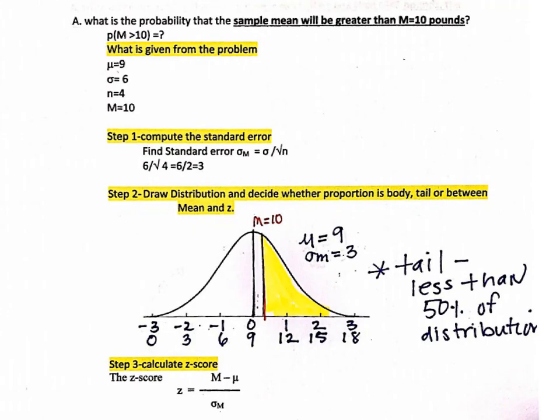Now we can draw our distribution. Because it is a z-score, we have 0 as the mean and 1 as the standard deviation. We have 0, 1, 2, 3 going to the right (positive side), and negative 1, negative 2, negative 3 going to the left (negative side). With mu equal to 9 and a standard error of 3, as we go across from 1, 2, and 3 we increase by 3. So z of 1 equals 12, z of 2 equals 15, z of 3 equals 18, negative 1 equals 6, negative 2 equals 3, and negative 3 equals 0. Those are the numeric values corresponding to each z-score.